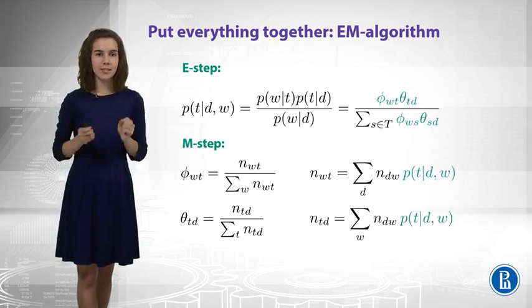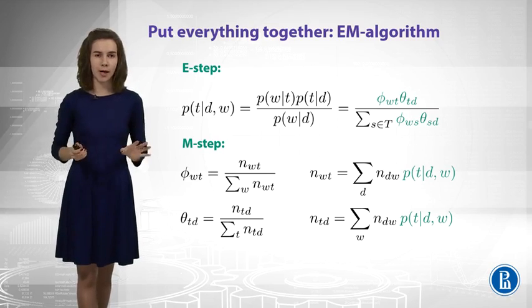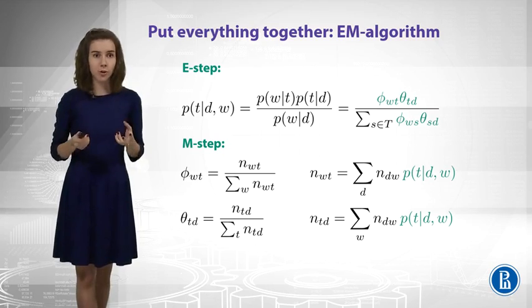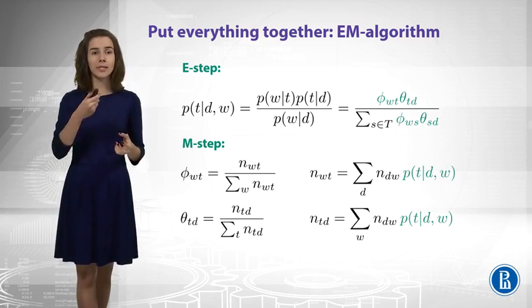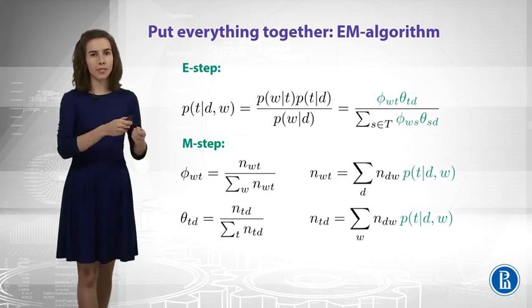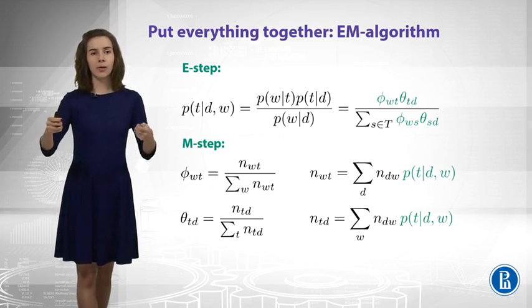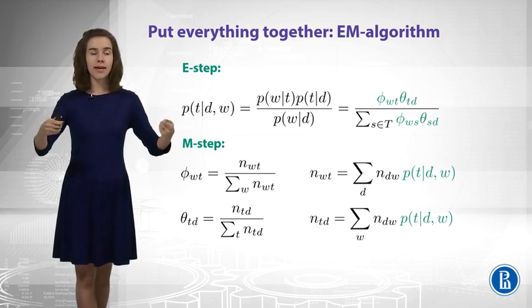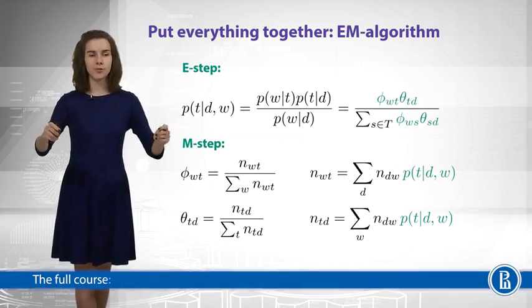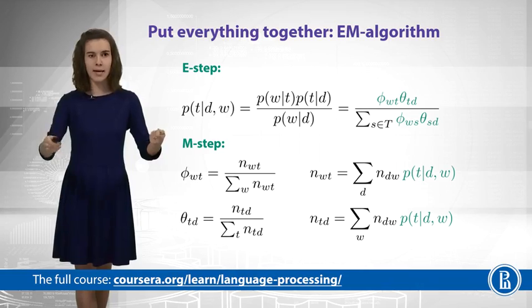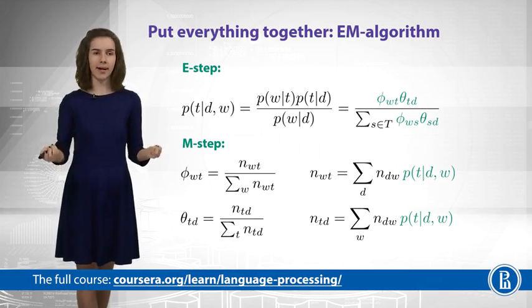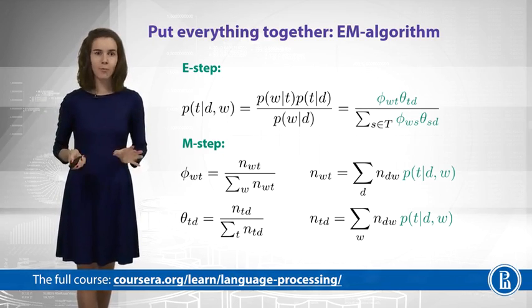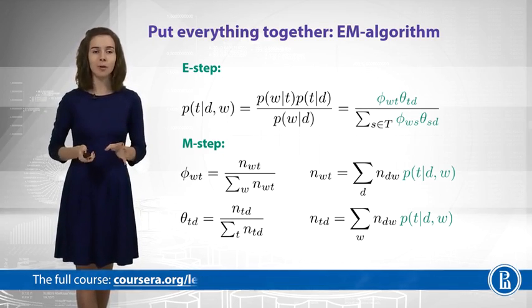So this is all formulas that we need for now. You just want to understand that to build your topic model, you need to repeat those E-step and M-step iteratively. You scan your data, you compute probabilities of topics using your current parameters, then you update parameters using your current probabilities of topics, and you repeat this again and again. And this iterative process converges, and hopefully you will get your nice topic model trained.